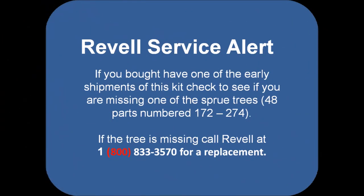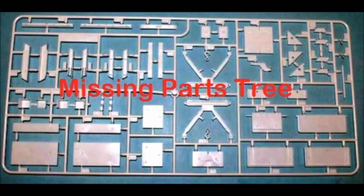When this kit was first released, it was missing one of the sprues. So they issued a warning and information regarding how to get that replaced. As you see it here, you can call that number and they will direct you to the correct place to get a new set of sprues for parts 172 to 274. So if you are buying a used kit, you won't know whether or not you got one of the earlier ones or not. So right away you should take a look at this to see if they are in the box. Here is what the missing sprue tree looks like. If you don't have one, give them a call and they will get you one.